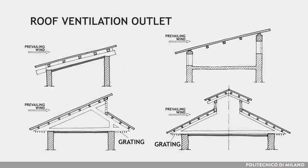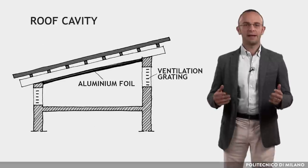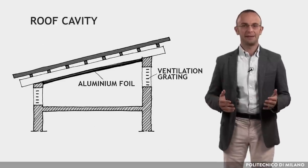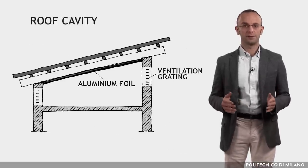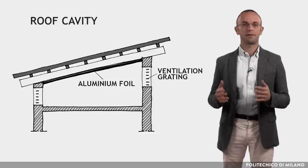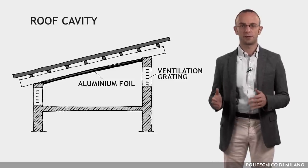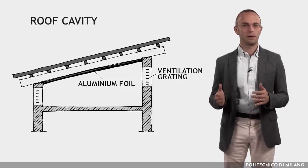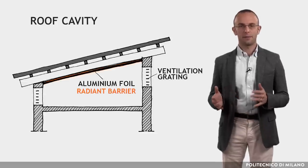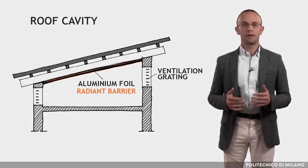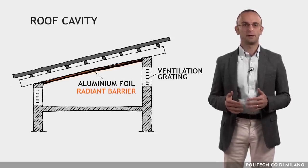The ventilation outlet can have different designs and should be possibly equipped with grating to protect the cavity. A reflective surface in the cavity is highly recommended since it reduces the radiant heat transfer by reflecting the long wave radiation emitted by the hot upper layer. This foil, called a radiant barrier, should be applied to the inner surface of the roof.